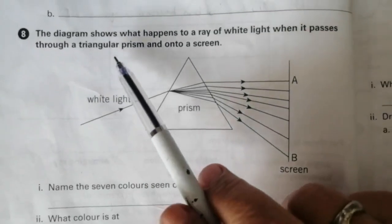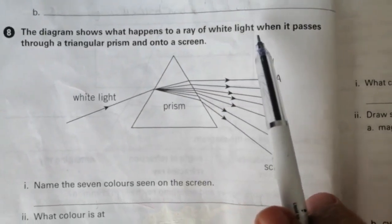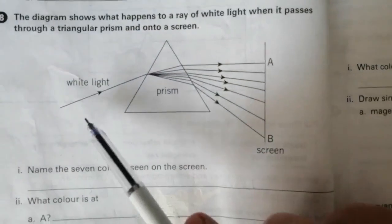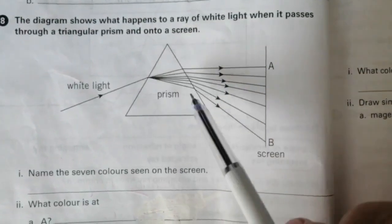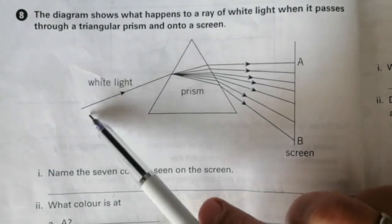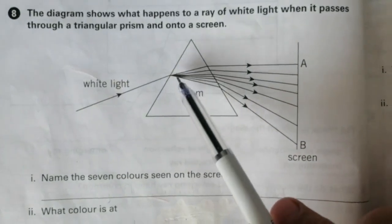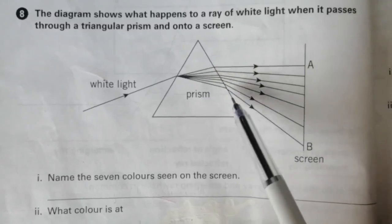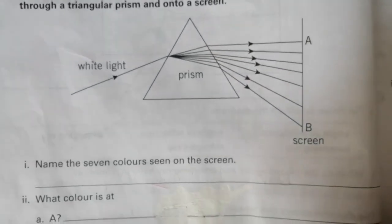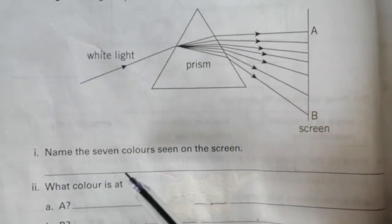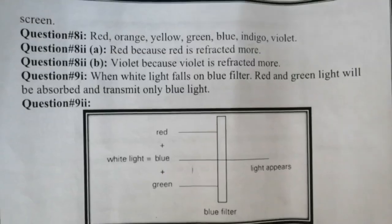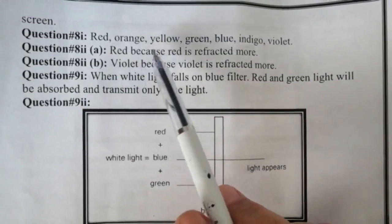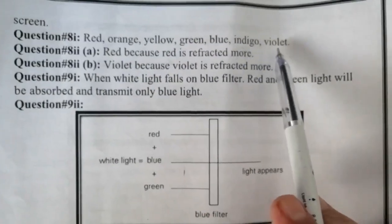Question number 8: the diagram shows what happens to a ray of white light when it passes through a triangular prism and onto a screen. This is a triangular prism made of transparent glass. A ray of white light passes through the prism and after passing through it, splits into seven colors of the spectrum. Part 1: name the seven colors seen on the screen. The seven colors are red, orange, yellow, green, blue, indigo, and violet.